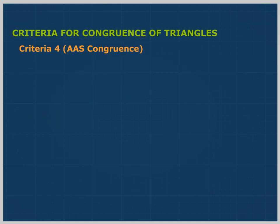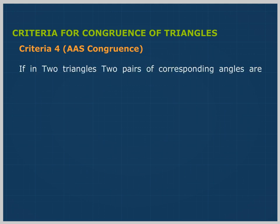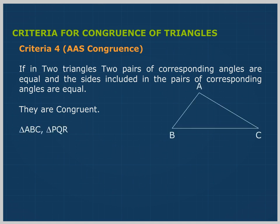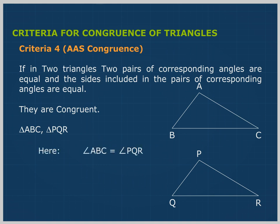Criterion 4: AAS Congruence. If in two triangles, two pairs of corresponding angles are equal and the sides included in the pairs of corresponding angles are equal, they are congruent. Here, angle ABC equals angle PQR, angle ACB equals angle PRQ, and BC equals QR. So, triangle ABC is congruent to triangle PQR.